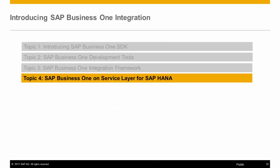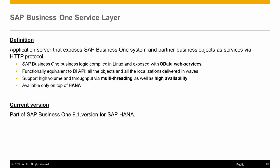Let's have a look at the newest integration with SAP Business One and SAP HANA: the service layer. The SAP Business One service layer is specific to SAP HANA and is a new integration solution for SAP Business One. The service layer exposes SAP Business One objects like in the DI API that we covered earlier, but using HTTP and OData, or Open Data Protocol, web services. SAP Business One business logic is exposed via OData and compiled in Linux, and the service layer supports high volume throughput as well as multi-threading capabilities. Currently, the service layer is only available for SAP HANA.